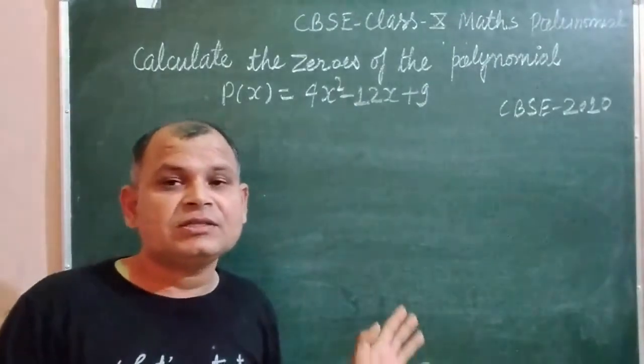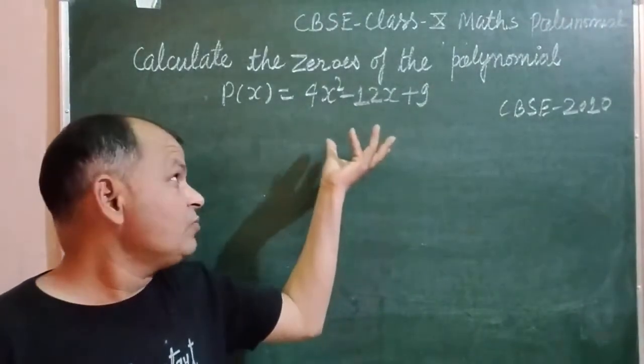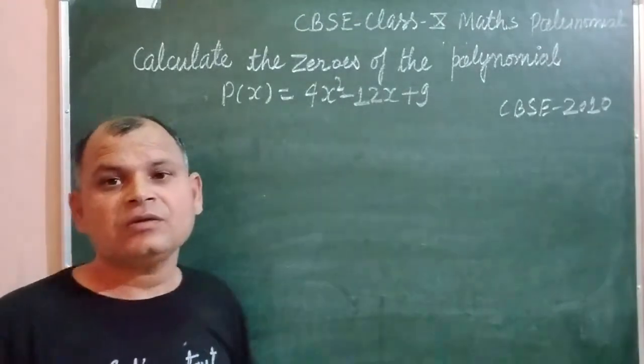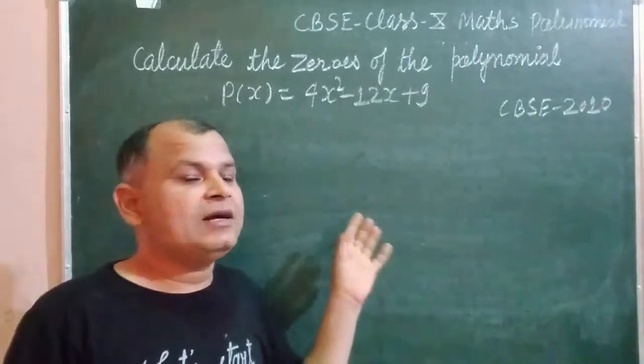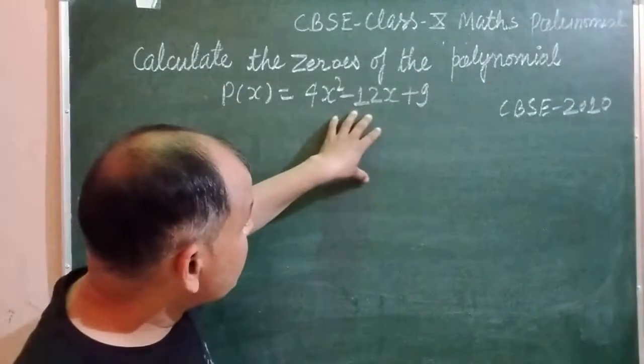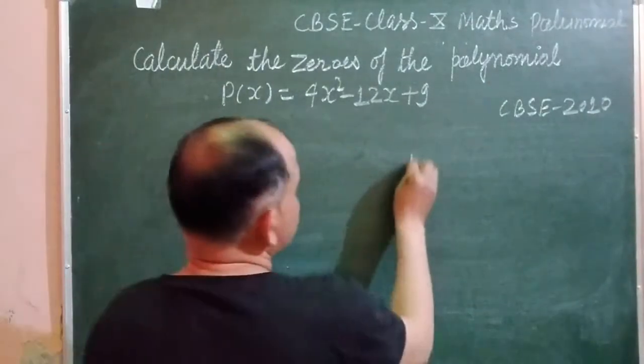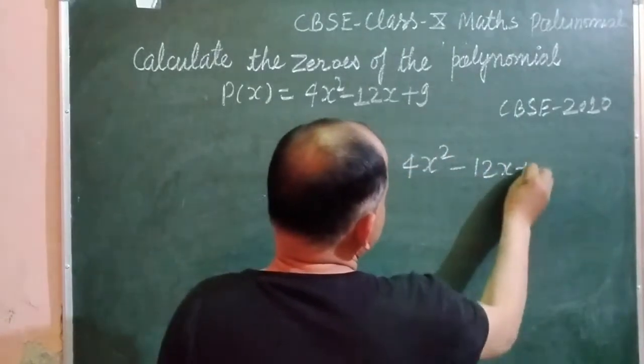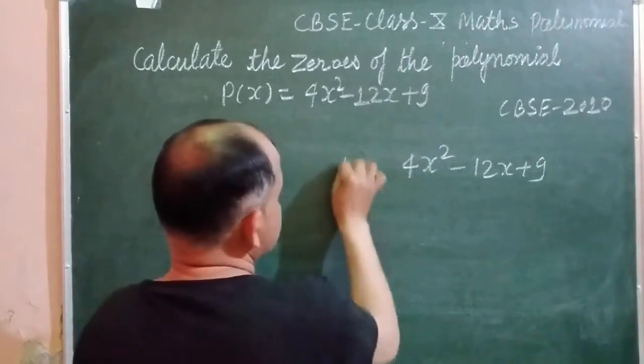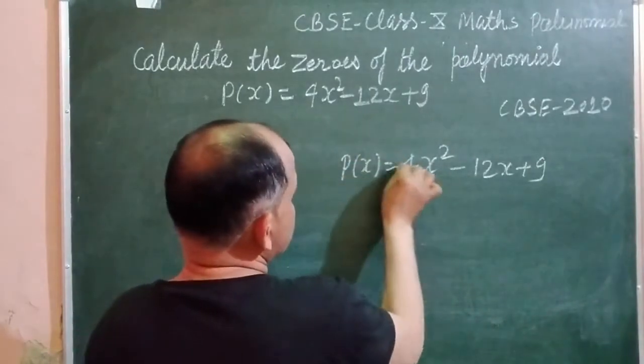So student, this question requires us to factorize the polynomial by splitting the middle terms. So we have 4x² - 12x + 9. This is the polynomial. This is given to us.